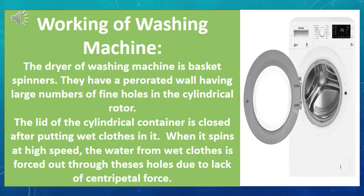Now we have to see the working of the dryer of a washing machine. The dryer of a washing machine consists of basket spinners — a cylindrical drum with a perforated wall having a large number of fine holes. The lid of the cylindrical container is closed after putting wet clothes in it. When it spins at high speed, the water from the wet clothes comes out with force through these holes due to lack of centripetal force.